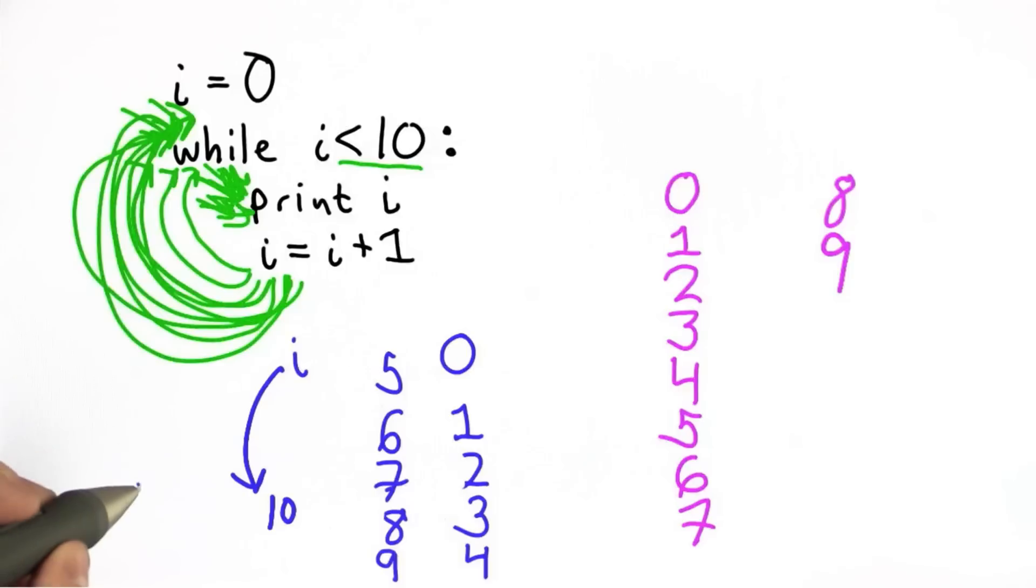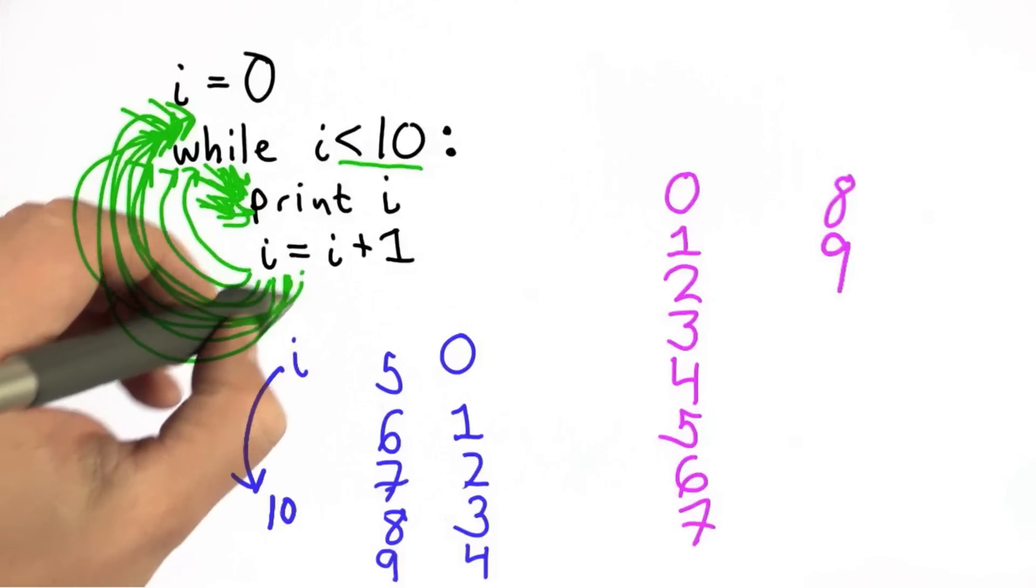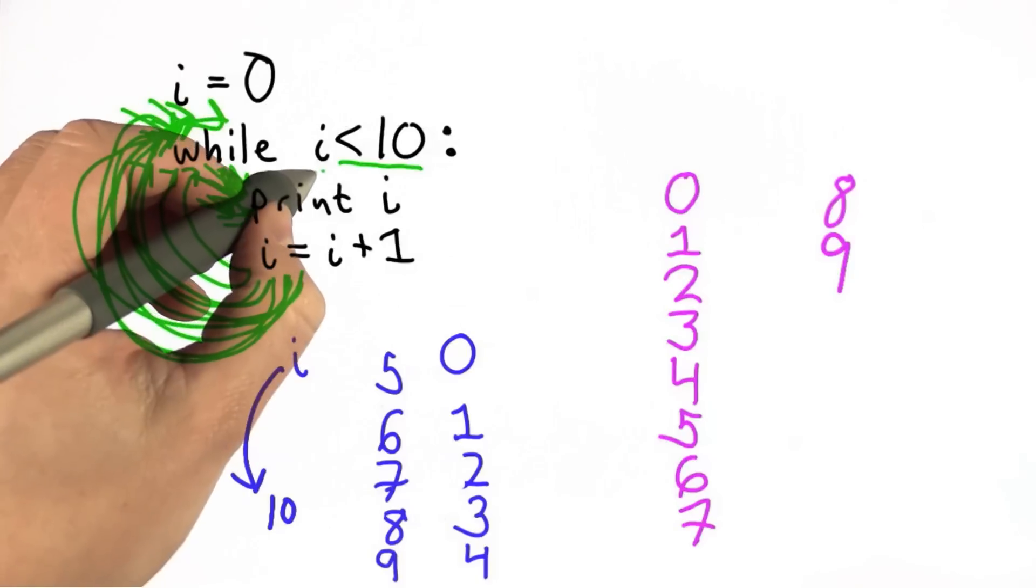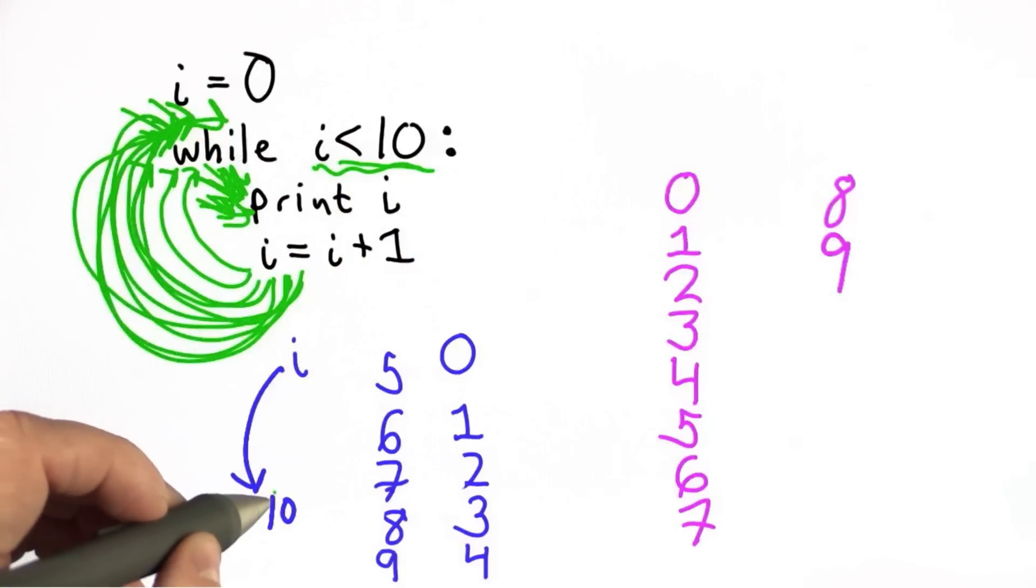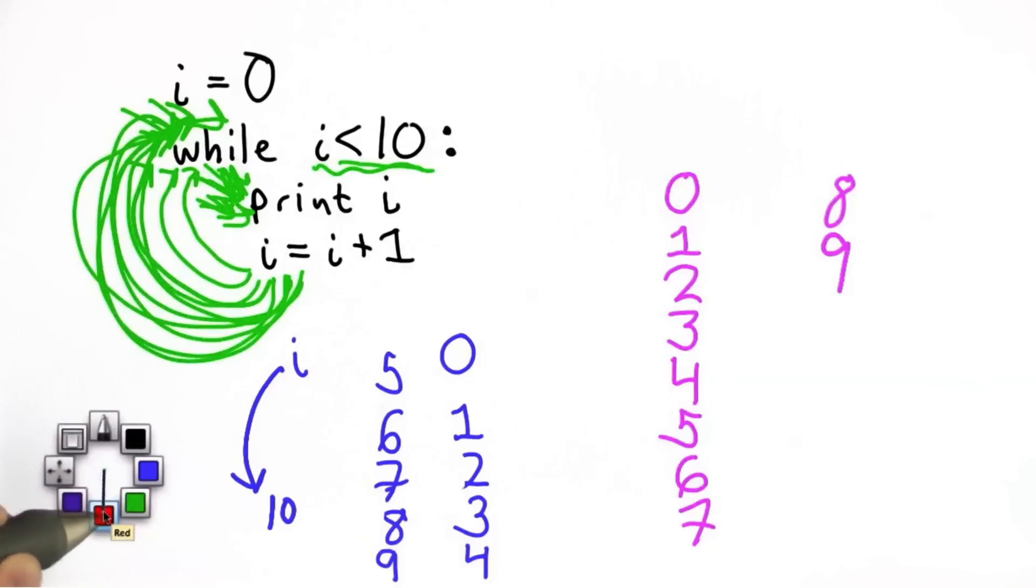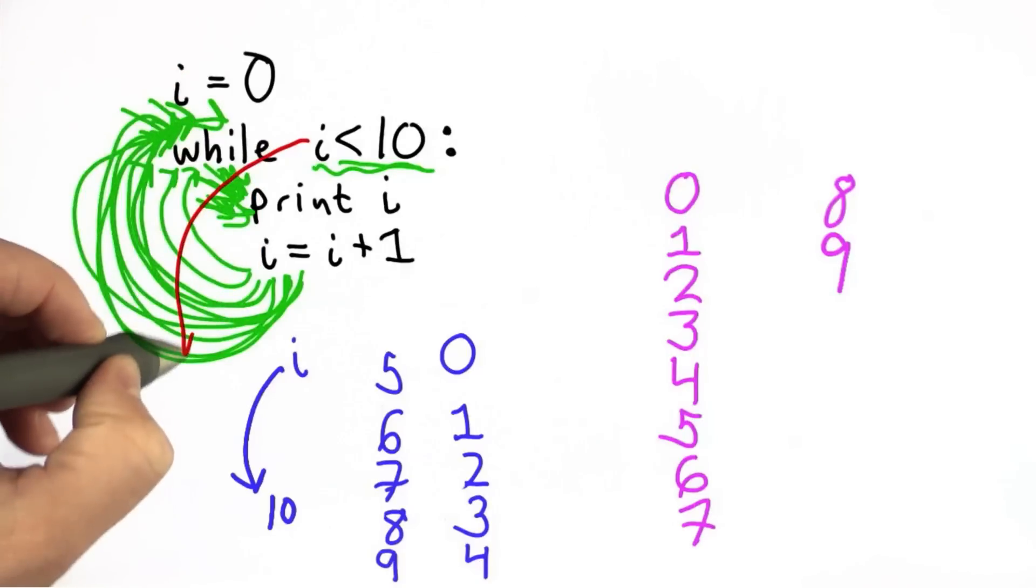And we go back again. And now we do i is less than 10. And now i has the value 10. 10 is not less than 10. So that will be false. And we're done with the while loop. We'll continue with whatever statement is here. In this case, there is none.